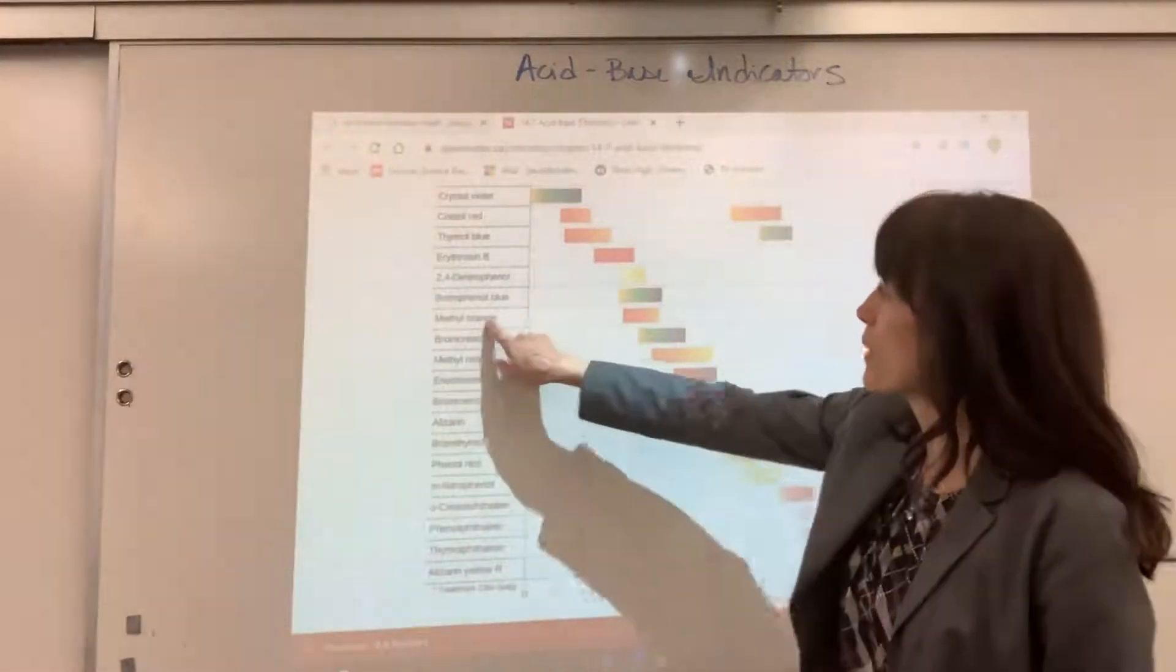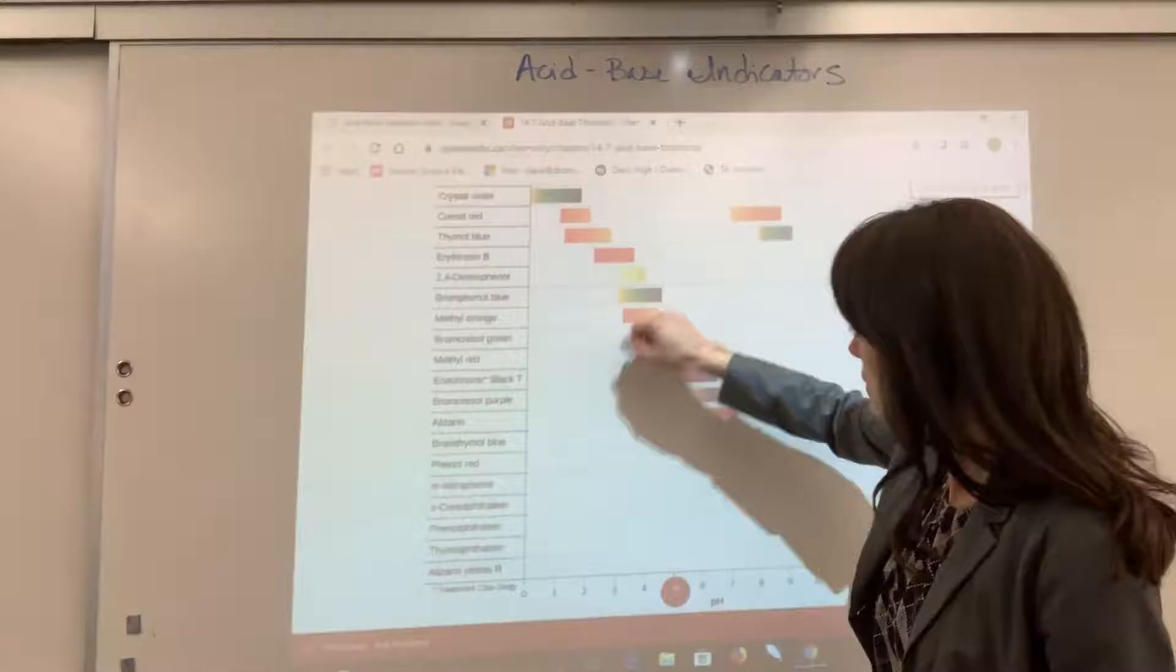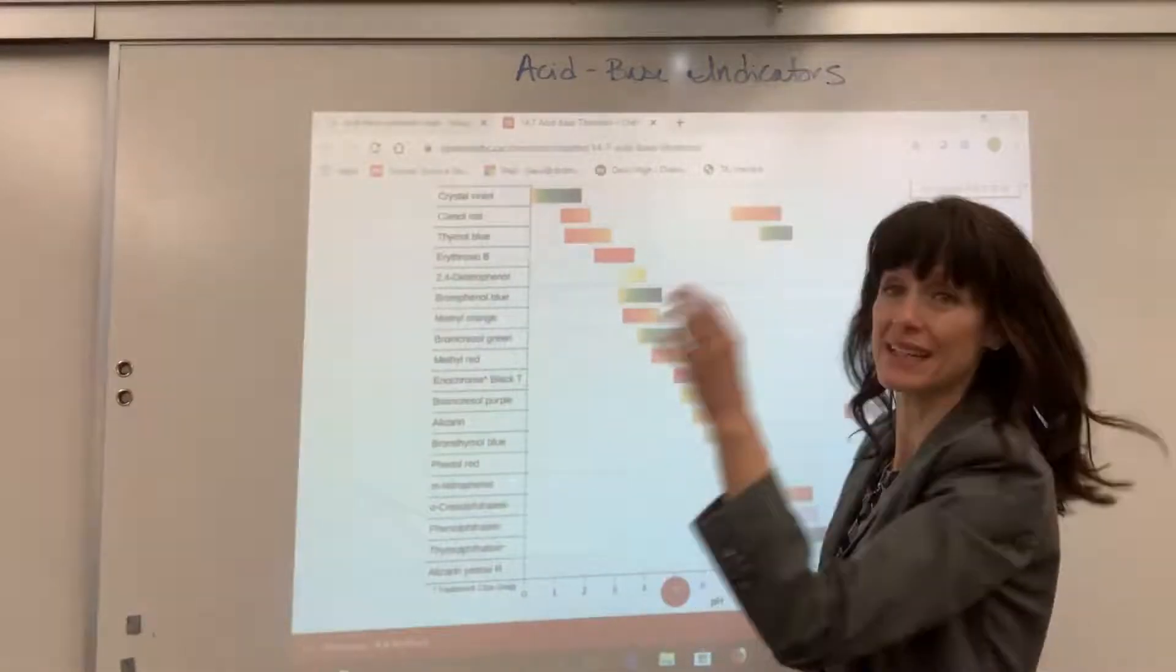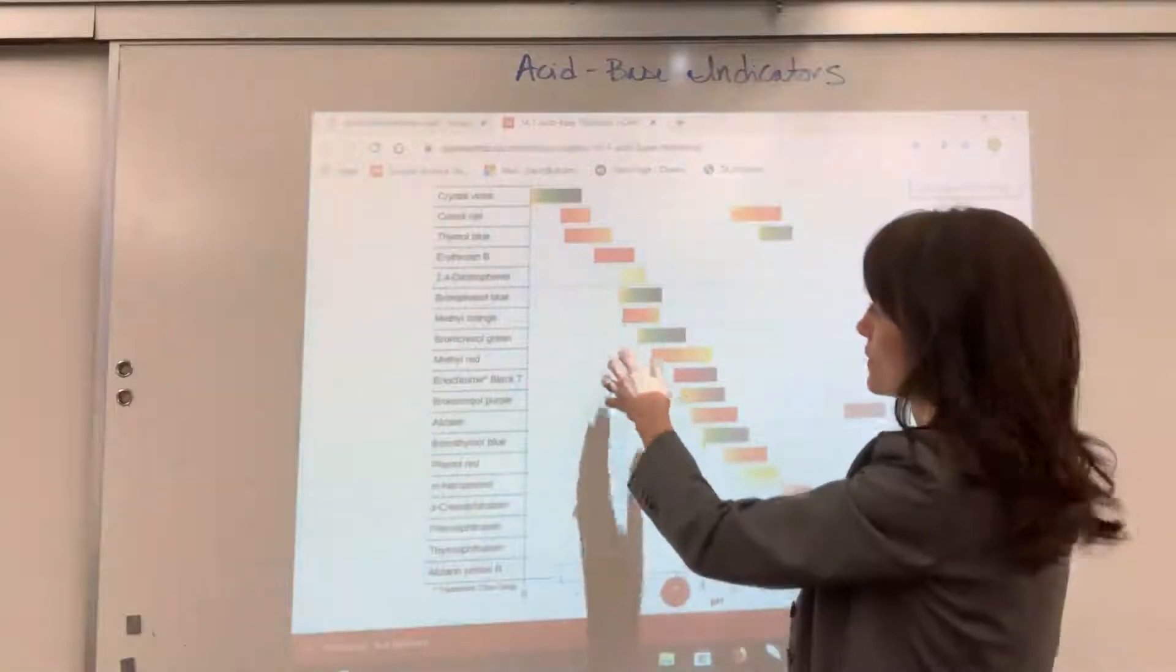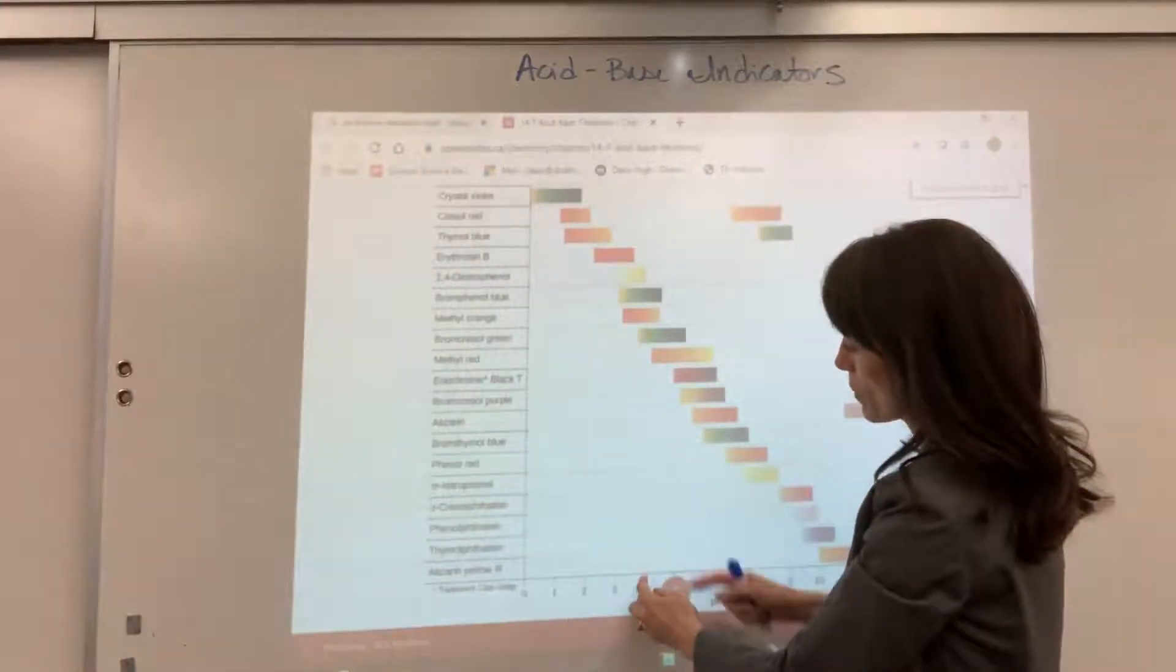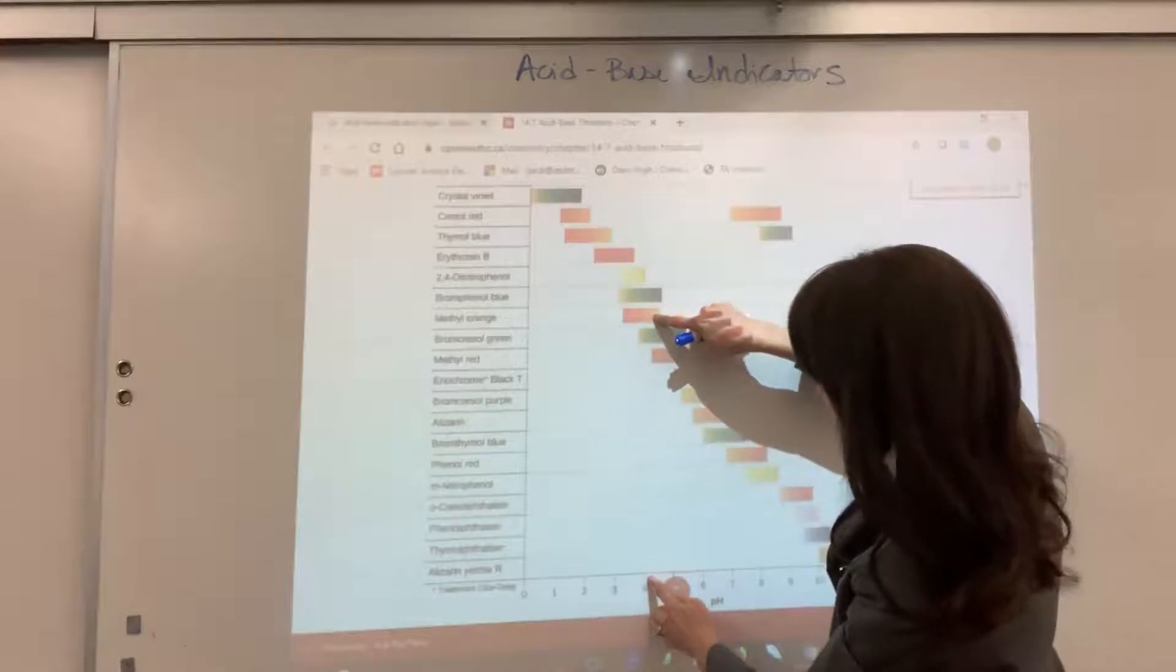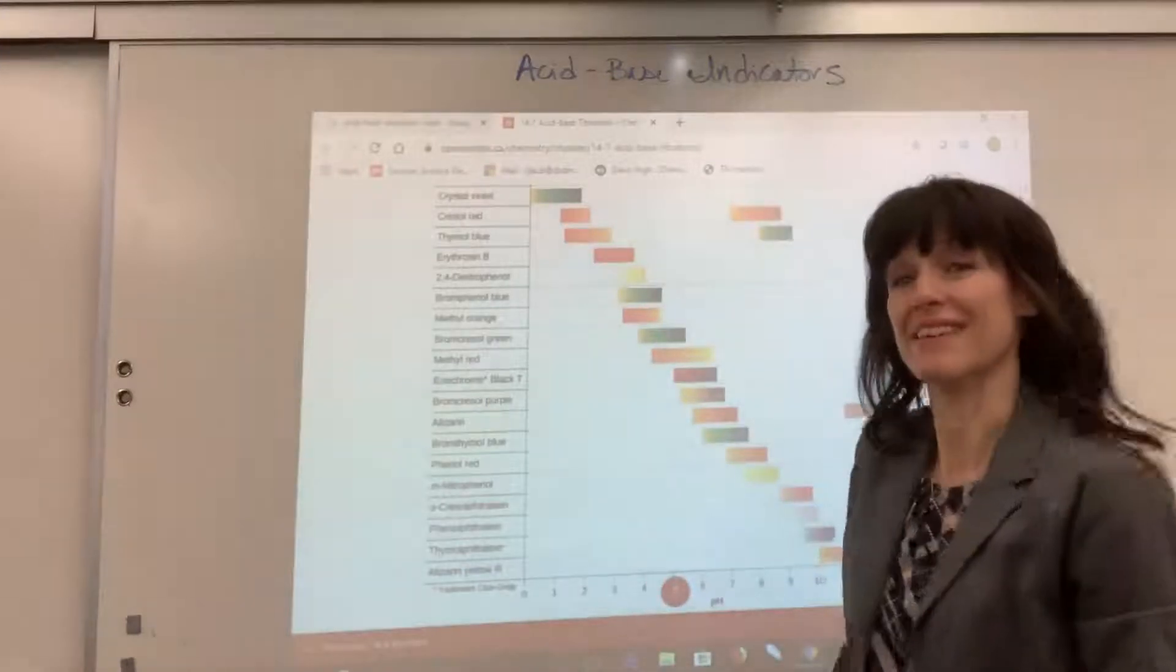Let's look at another one, methyl orange. If you have a solution less than 4, when you put the indicator drops inside the solution, it's orange. But when the pH changes from, let's say, a 3 to a 4, just past 4, it turns to a yellow color.